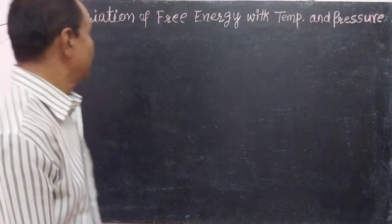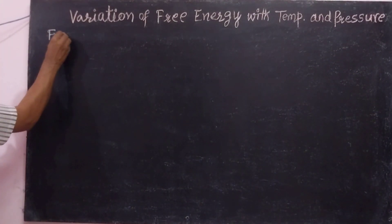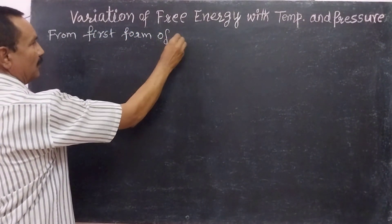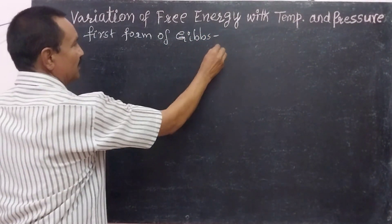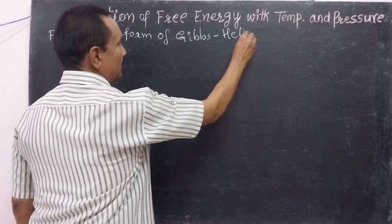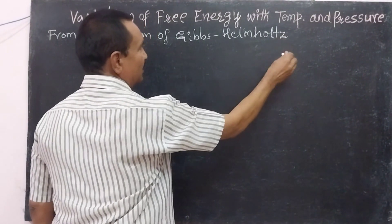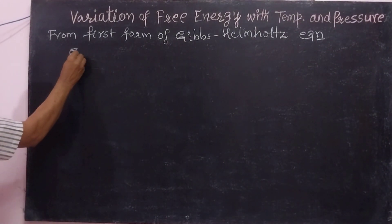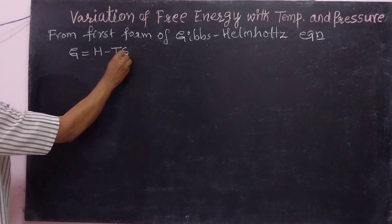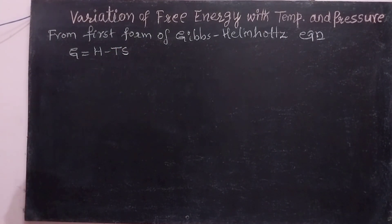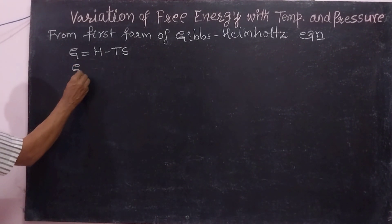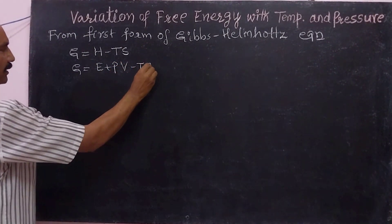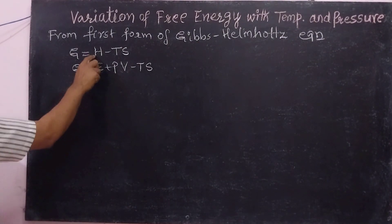Let us derive that relation. From the first form of the Gibbs-Helmholtz equation, we have G equal to H minus TS. But H is equal to E plus PV. Suppose this is equation 1.